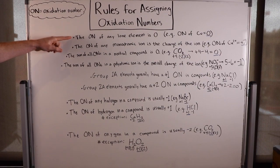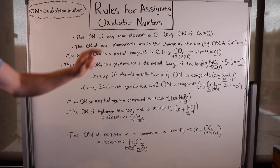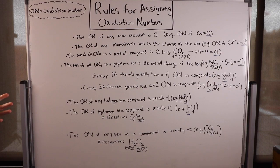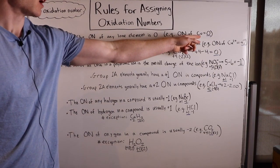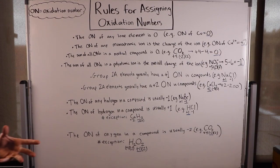The first rule is that the oxidation number of any lone element is zero. By lone element, I just mean an element by itself with no charge — a neutral lone element. For example, a lone uncharged copper atom would have an oxidation number of zero.